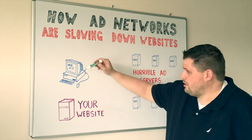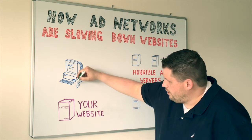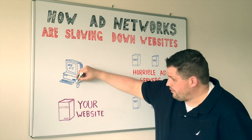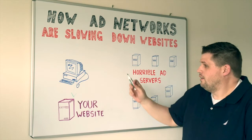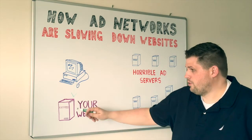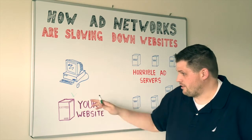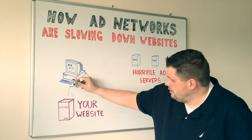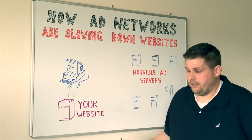What happens when somebody goes to visit your website — some reader wants to learn about your cookies, they look for a cookie recipe, and they make a request to your server right here. When they make that request, a whole bunch of different things happen. Your server loads up a lot of assets like images and styles and those types of things, and it sends them directly back to this reader and they can get content pretty quickly.